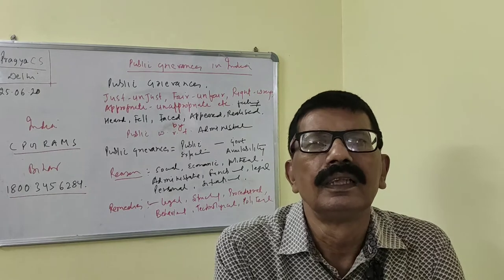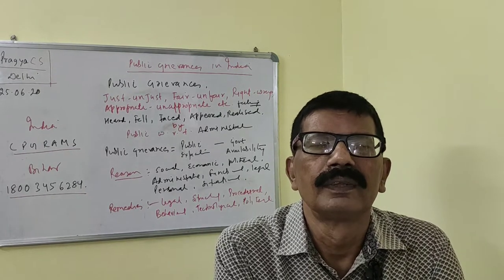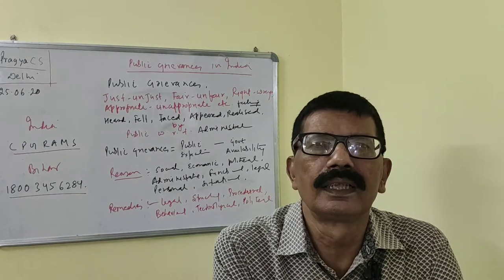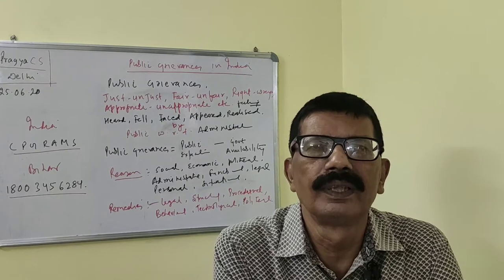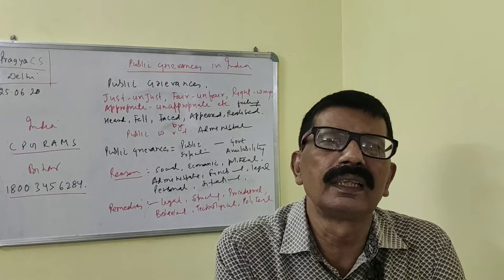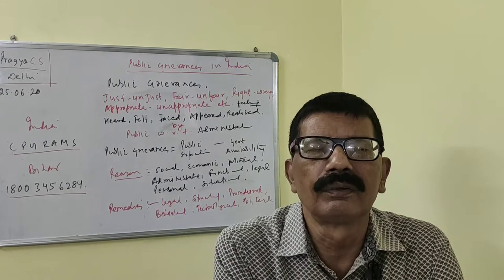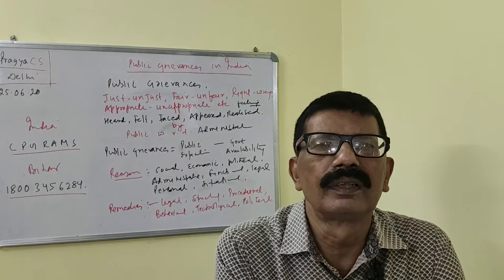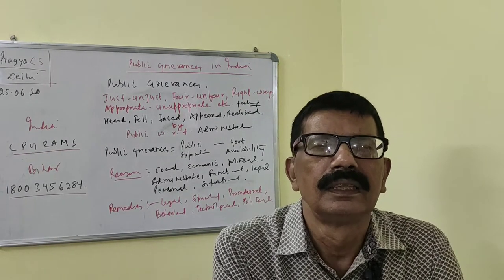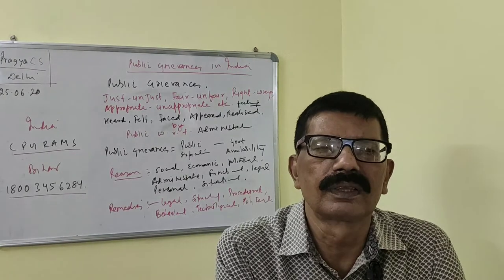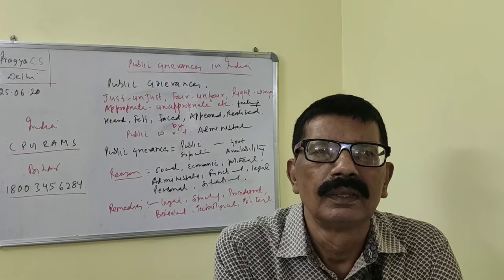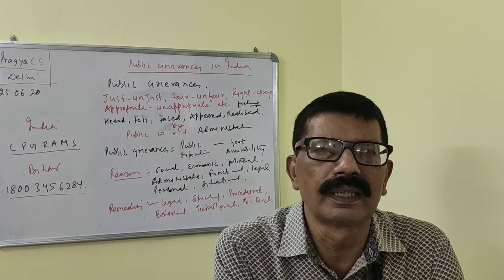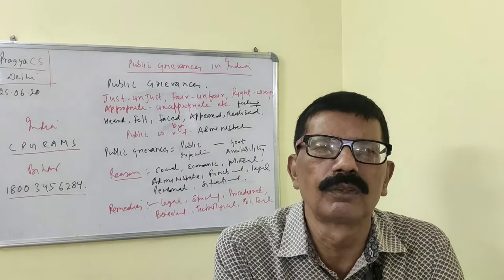So what is public grievances? In general, it is some sort of reflector of a poor relation between governance and administration. It is basically the gap between public expectation and administrative availability. There is always increasing public expectation — infinite public expectation — and on the other hand, government ability has always limitations: limited resources, limited manpower, etc. So there will always be some gap and there will definitely always be public grievances. To consider zero public grievances is not a practical or pragmatic approach; it is not possible in reality.